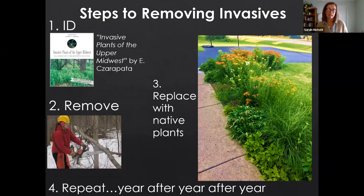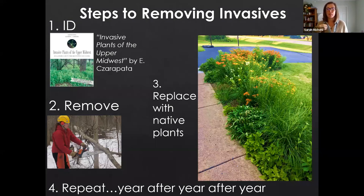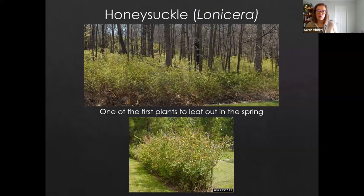Your second step is removal — clearing out that brush. The third step, which is vital, is replacing what you removed with native plants, trees, and shrubs, using live plugs or seed. Then you repeat that process year after year. Eventually, if you keep managing the area, you reach a point where it's more stable and requires much less work.